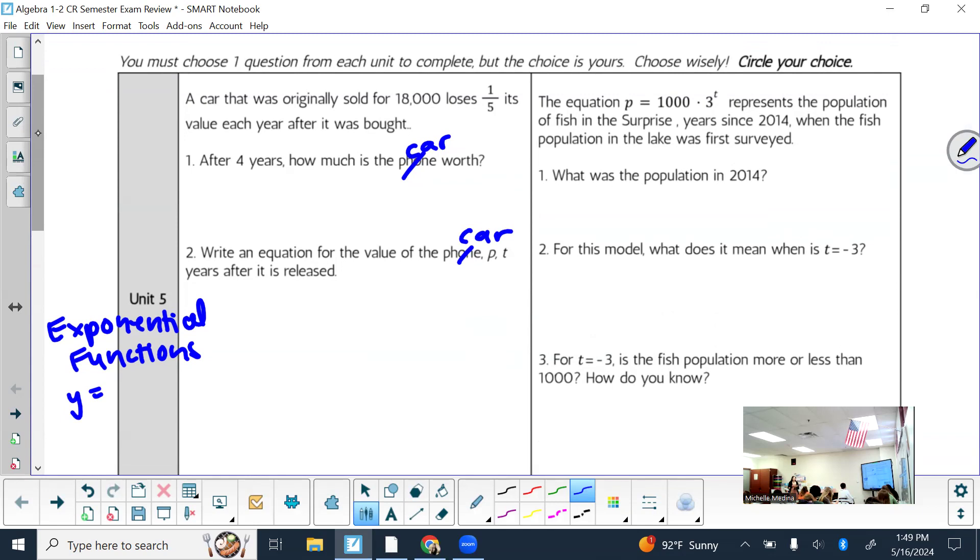They tell me that the car was originally sold for $18,000, losing a fifth of its value each year. How do I set up things like that? You could make a chart. Did you say x squared is quadratic? So exponential, think all the way back to the beginning of the semester.